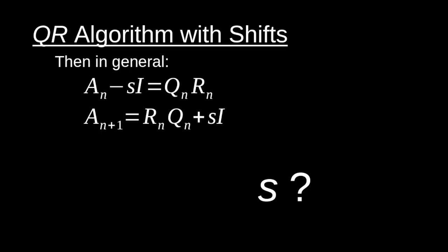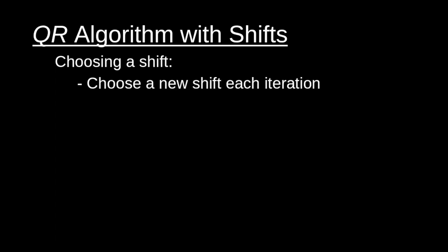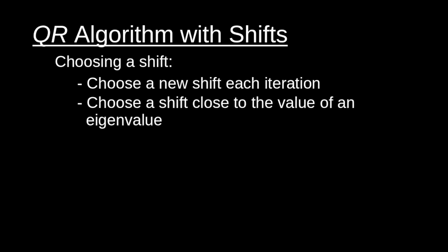How do we actually choose a shift that's going to speed things up? First, we want to choose a new shift with each iteration — each shift is special to each subsequent similar matrix we compute. Second, we want a shift close to an eigenvalue. That seems circular, but we have a useful tool to make a good educated guess at what one of our eigenvalues is going to be.